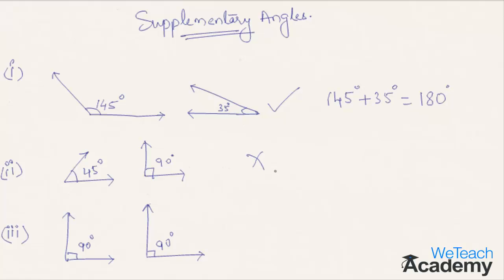Now for the second pair of angles: these are not supplementary angles, since the sum of these angles is 45 degrees plus 90 degrees, which equals 135 degrees. This is not equal to 180 degrees, hence they are not supplementary angles.